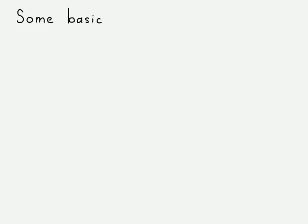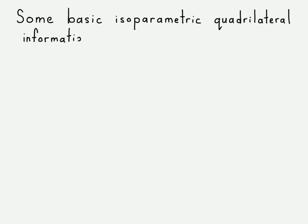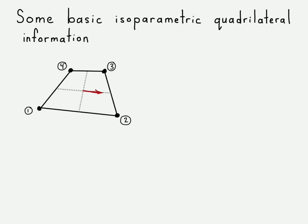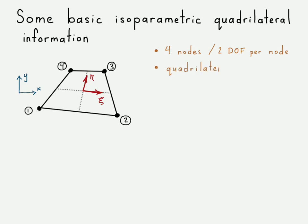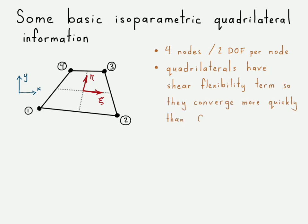Let's start with some basic information about the isoparametric quadrilateral element. There's our four-node isoparametric quadrilateral element — four nodes, two degrees of freedom per node, just like our constant strain triangle element had two degrees of freedom per node. One major difference is that the quadrilateral element has a shear flexibility term, which means that it can converge more quickly than the constant strain triangle element.